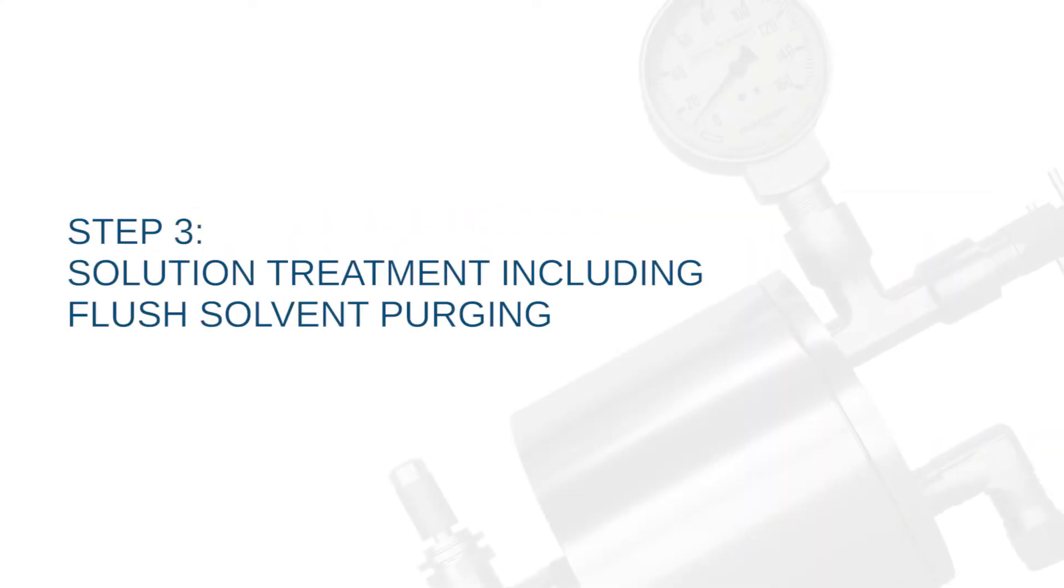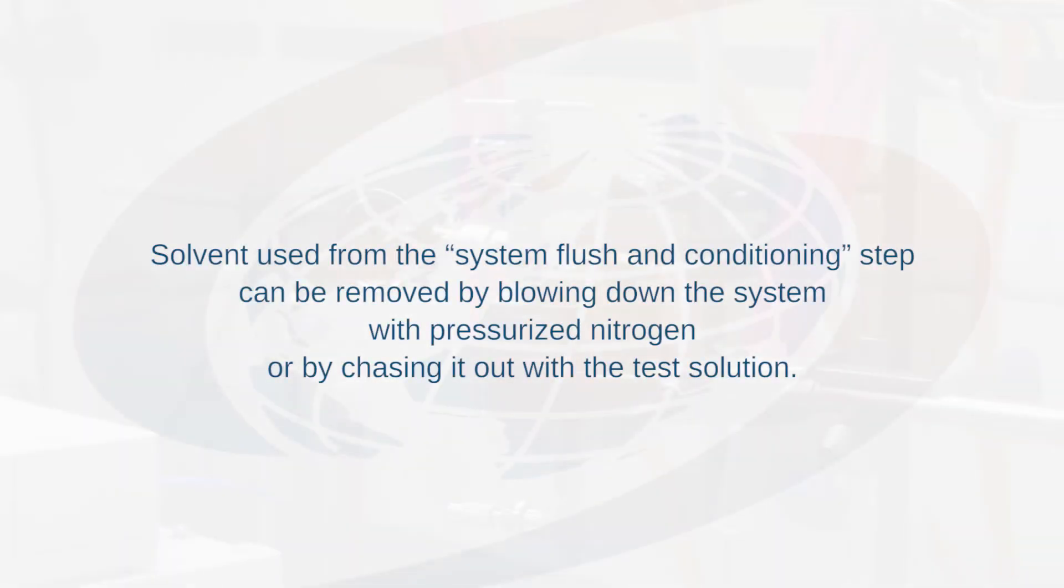Step 3: Solution treatment including flush solvent purging. Solvent used from the system flush and conditioning step can be removed by blowing down the system with pressurized nitrogen or by chasing it out with the test solution.